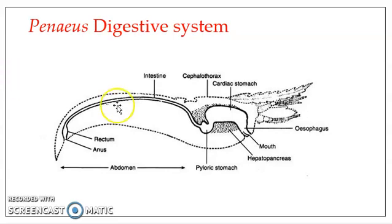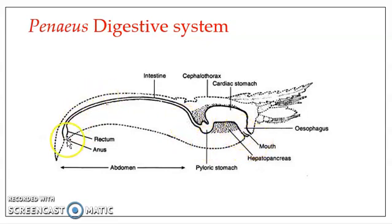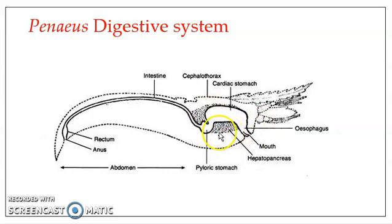Here we have a figure which shows the digestive system. The alimentary canal is a tube through which the food passes. It starts with the mouth and ends at the anus. Digestion of food takes place with the help of enzymes produced by digestive glands. In Penaeus, they have only a single digestive gland, the hepatopancreas, which is associated with the stomach part of the alimentary canal.